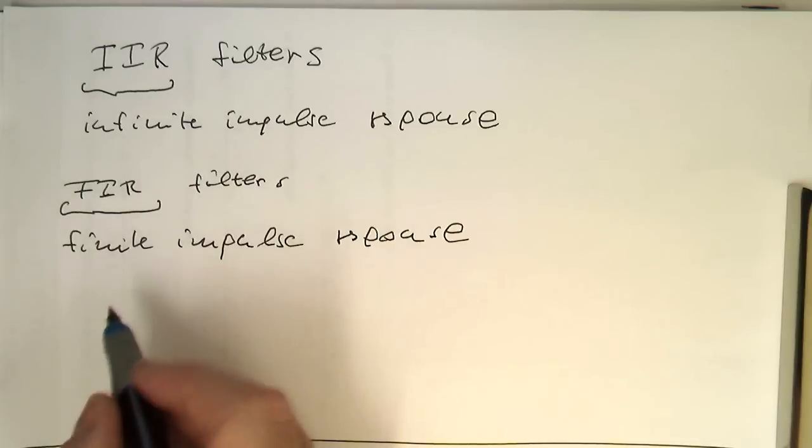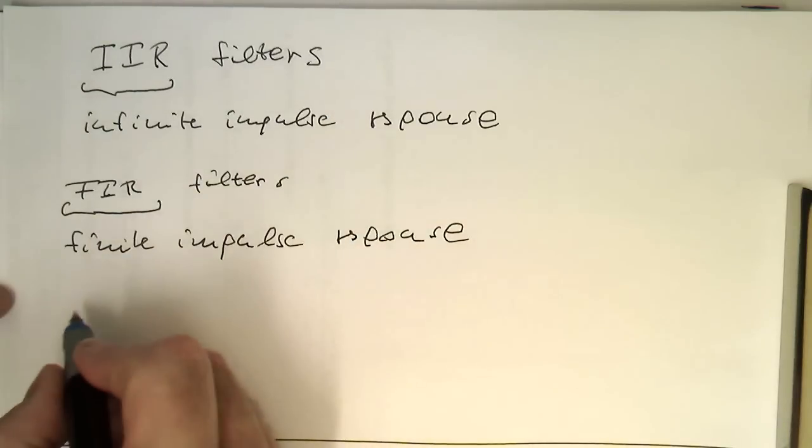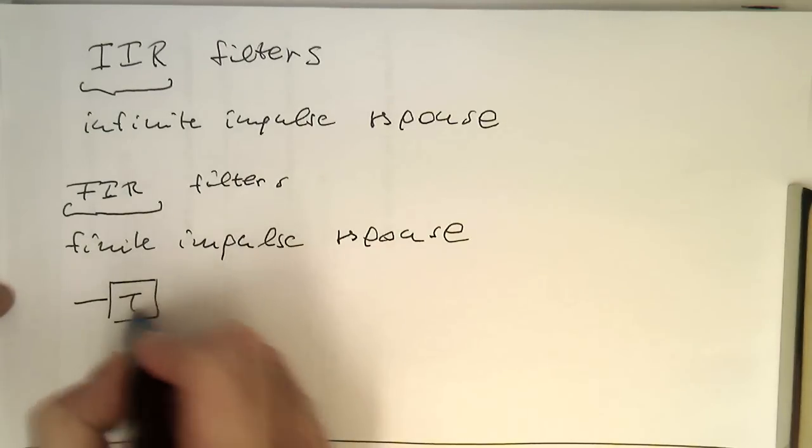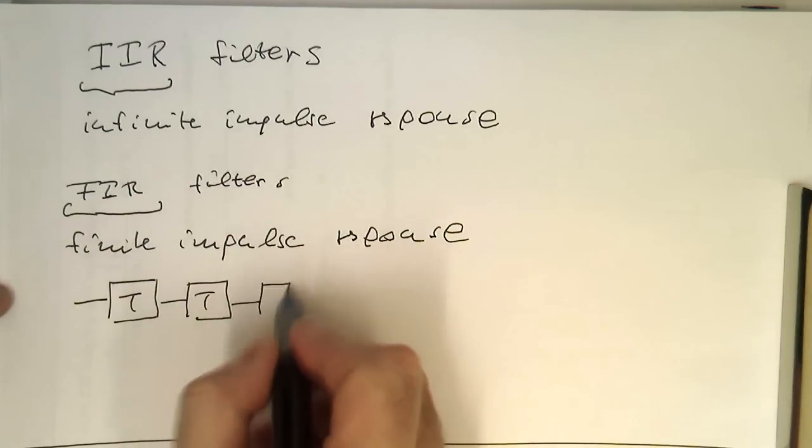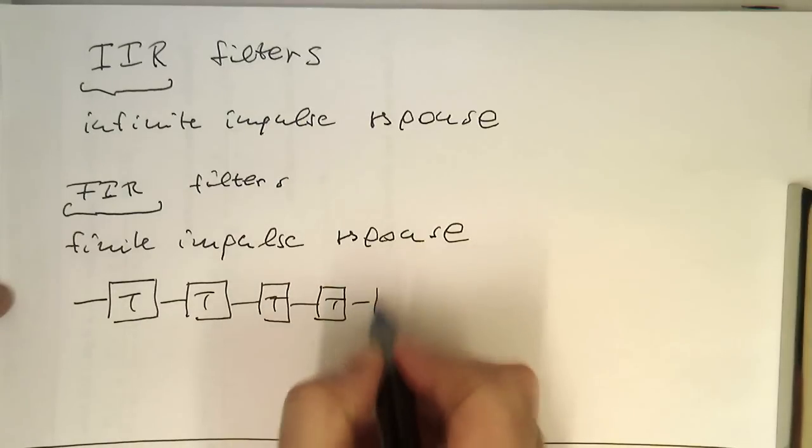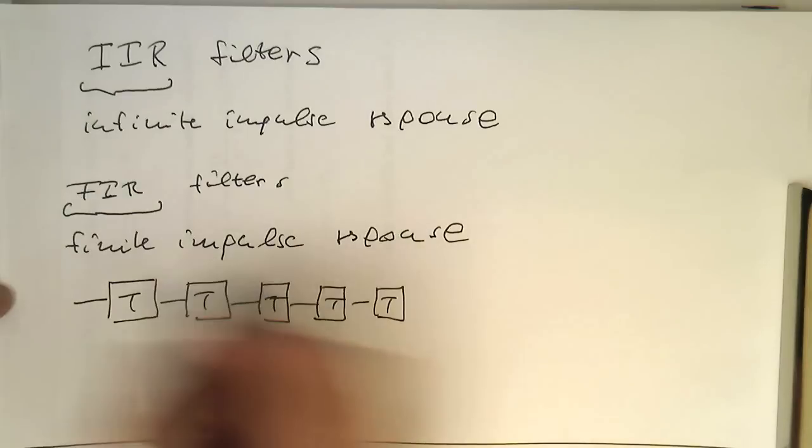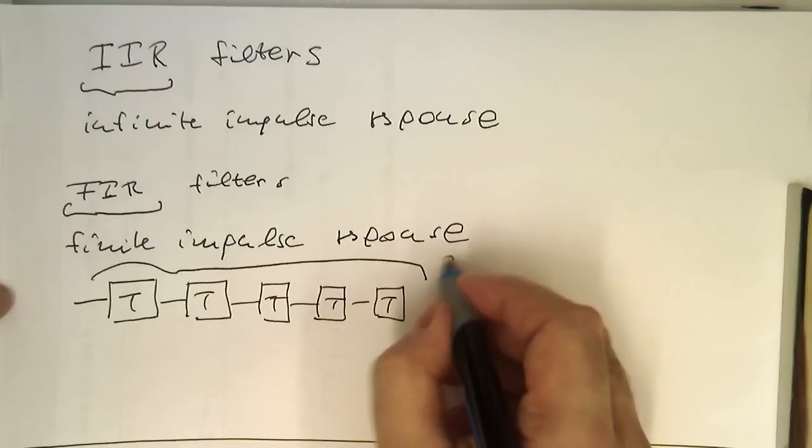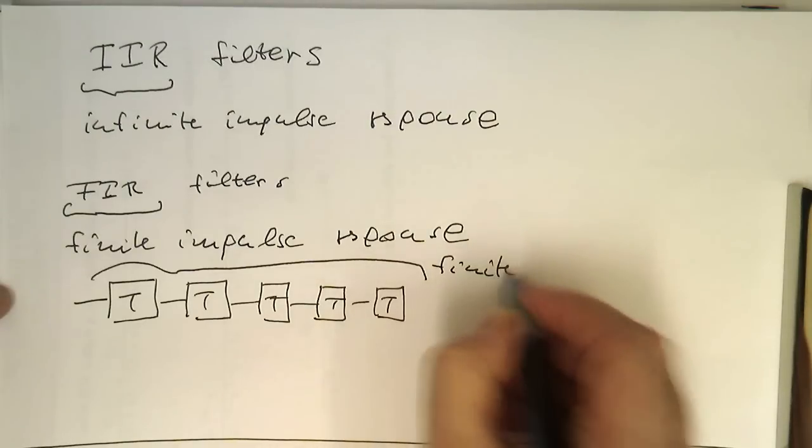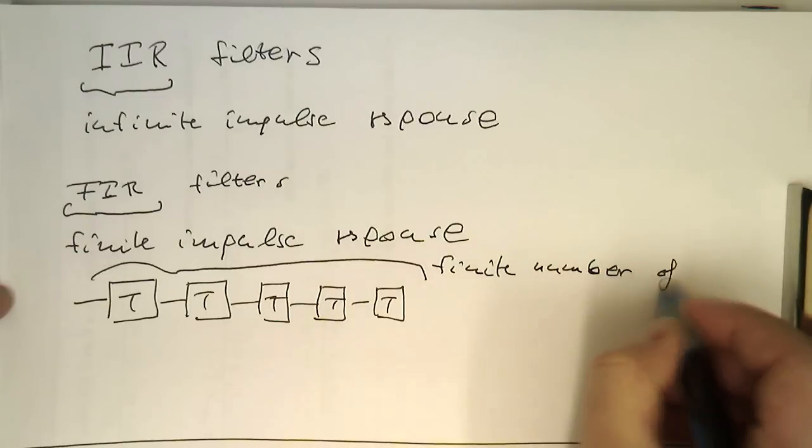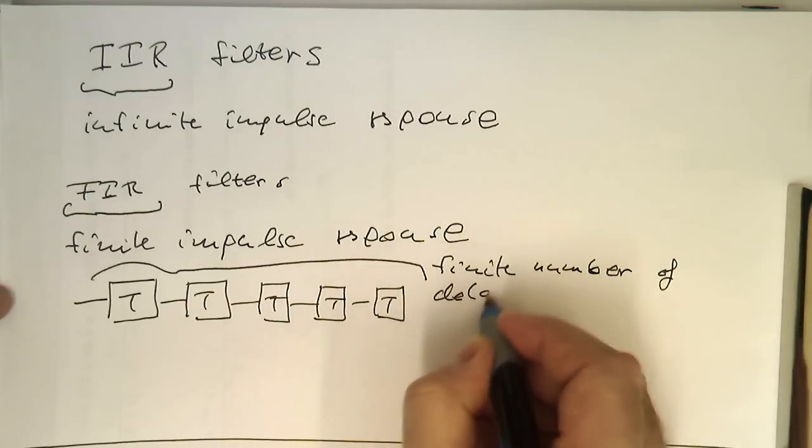The FIR filter's impulse response is generated by the trivial fact that this delay line at some point ends. We've got a certain number of delay steps here, a finite number of delay steps.